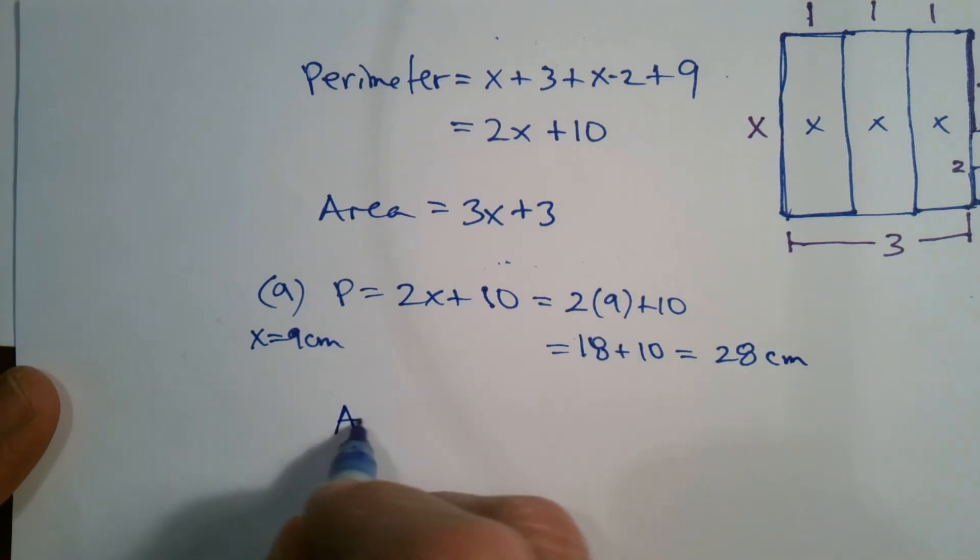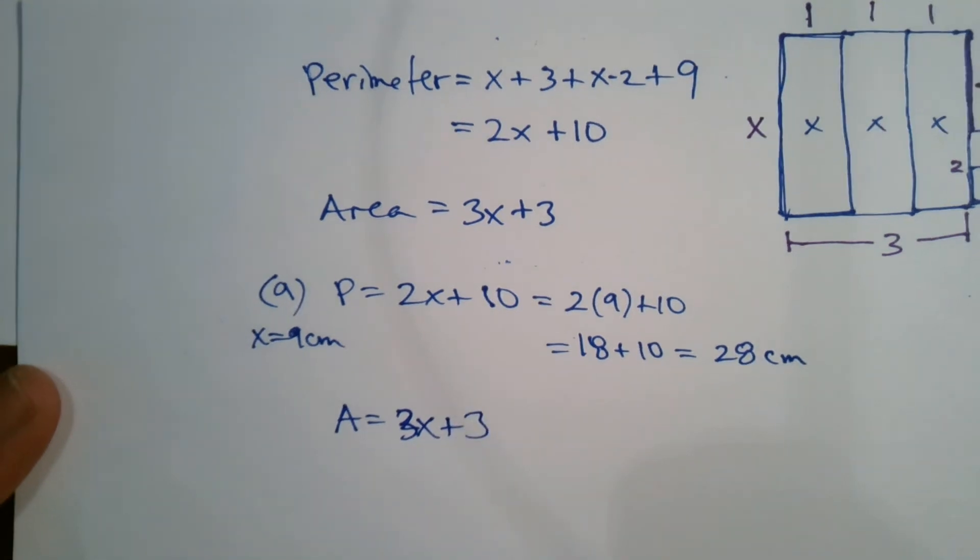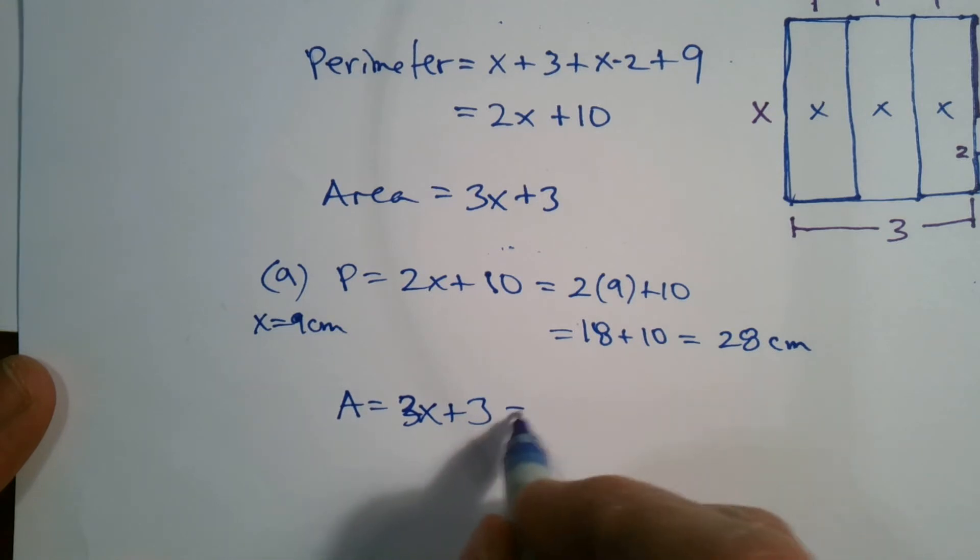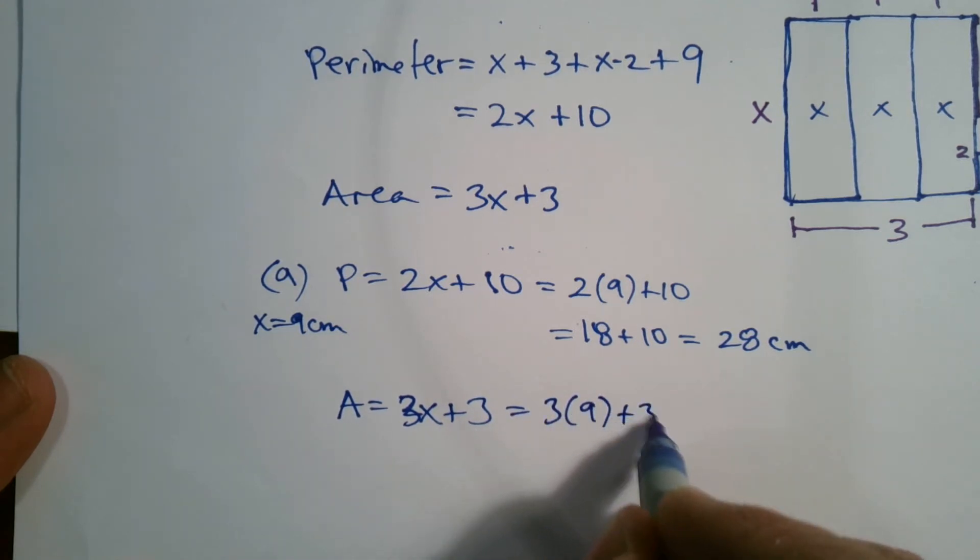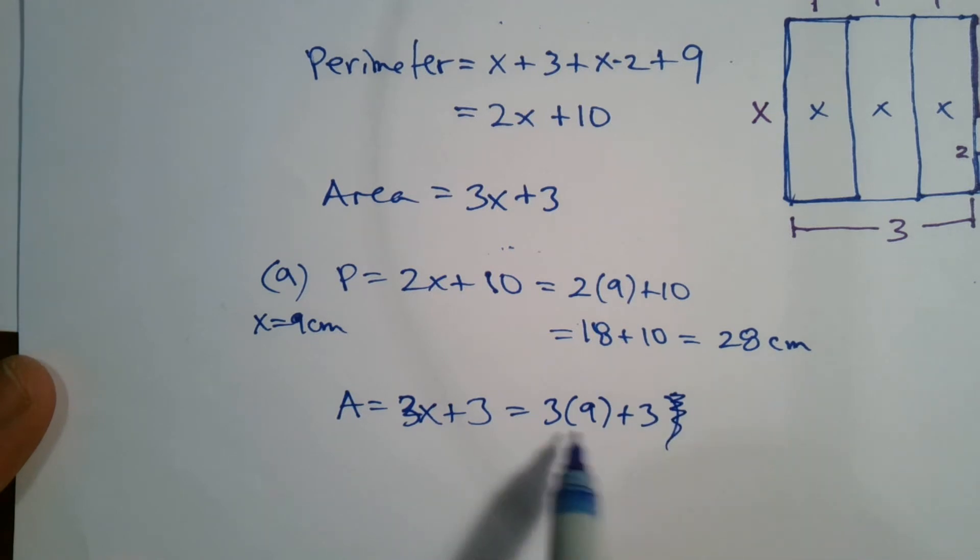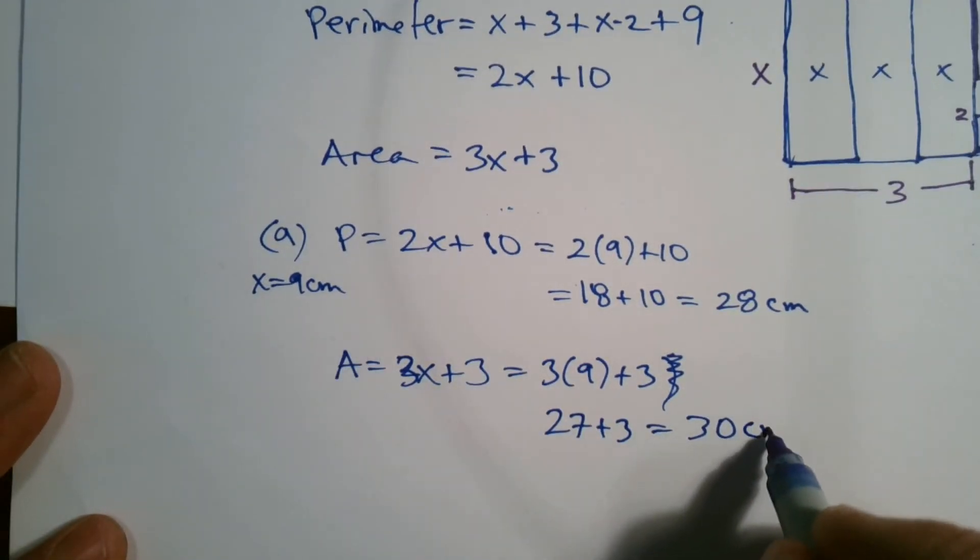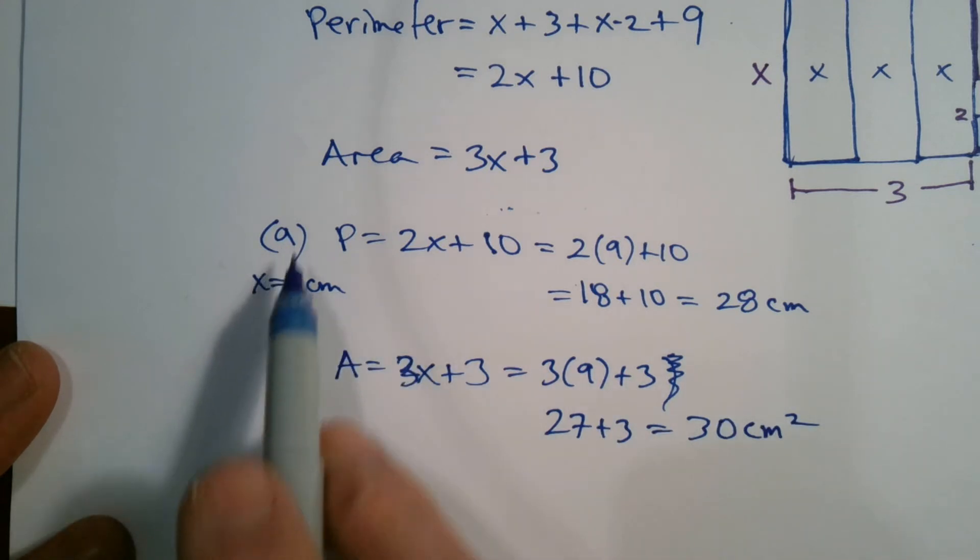So what about area? Area, remember the expression for area was 3X plus 3. And again, I'm using nine for the X. So it's going to be 3 times 9 plus 3. 3 times 9 is 27, and 27 plus 3 is 30. So it's 30. And then we're talking about area, so it's centimeters squared. So there's my answer to A.